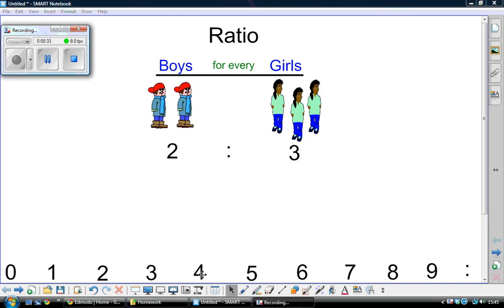Now, that would mean if we had four boys, that's twice as many boys, we would also have twice as many girls. Four boys for every six girls.